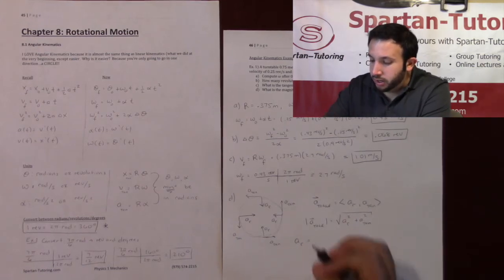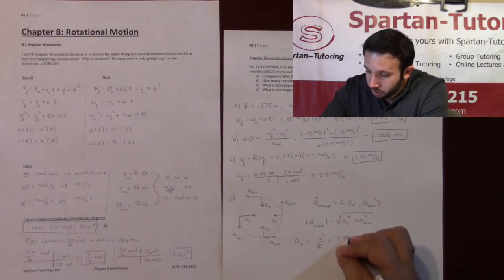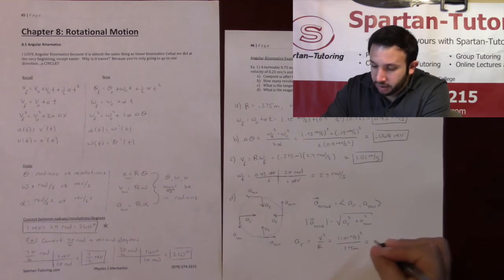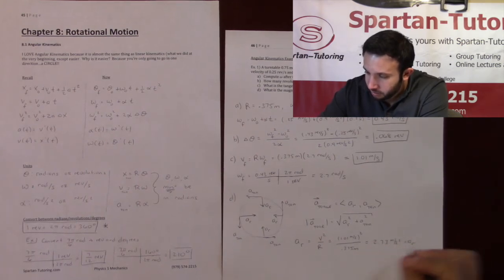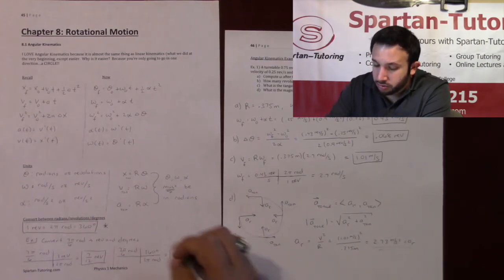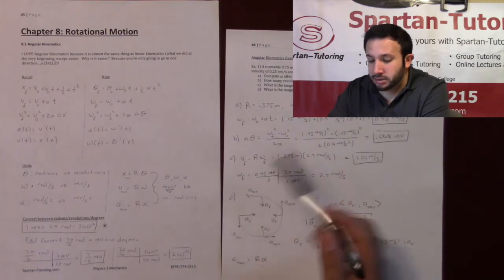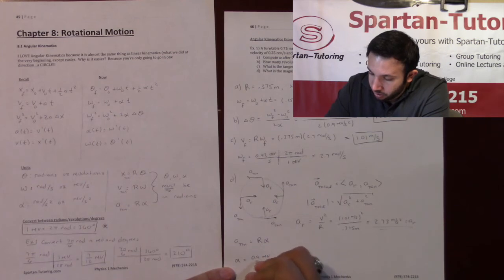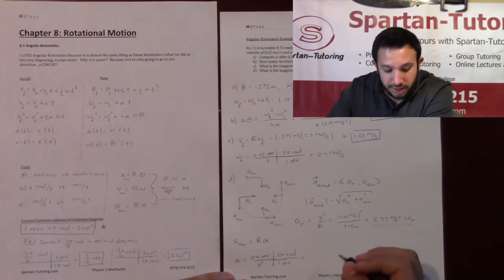Radial acceleration: a_radial = v²/r = (1.01 m/s)² / 0.375 m = 2.73 m/s². For tangential acceleration: a_tangential = r·alpha, but alpha = 0.9 rev/s² must be converted to radians per second squared first. Using 0.9 rev/s² × (2π rad / 1 rev) = 5.65 rad/s².